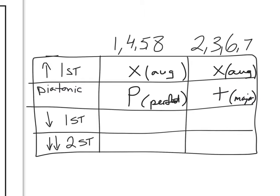Now, across the top of the boxes, our intervals are divided into two families. We've got intervals of size one, four, five, and eight. And we also have intervals of size two, three, six, seven, the other ones. We're going to start with diatonic intervals first. Diatonic intervals can either be perfect, if they're of size one, four, five, eight, or they can be major, if they're of size two, three, six, seven.